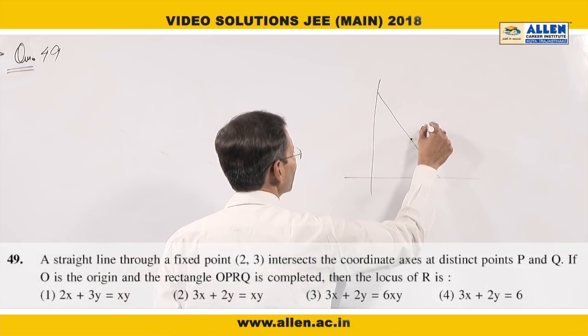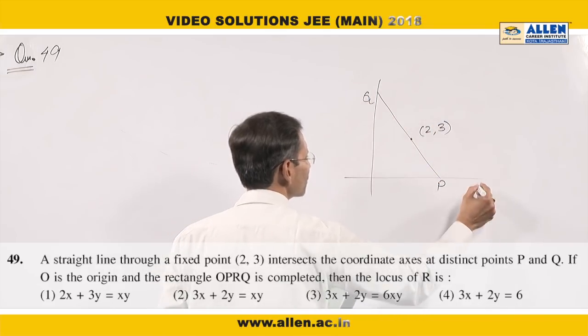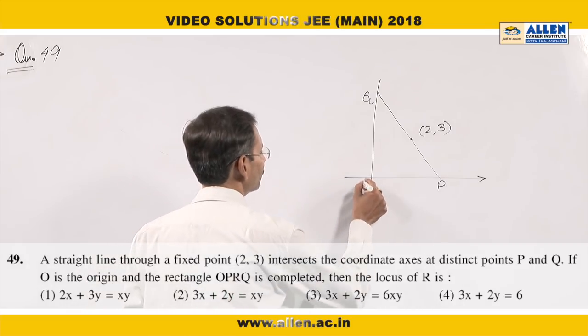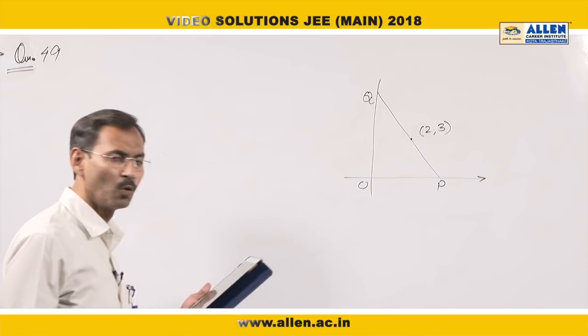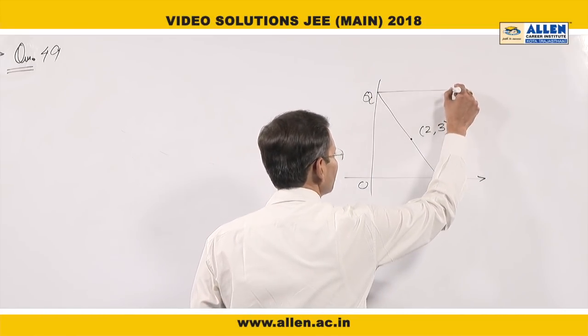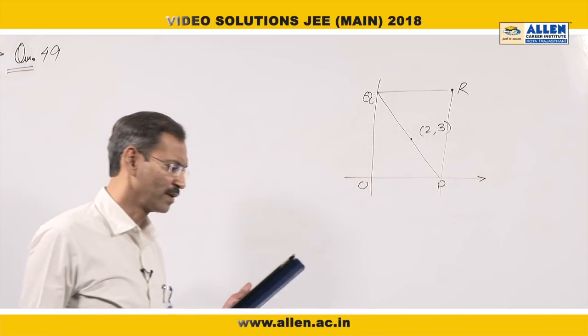This is 2 comma 3 and it is intersecting coordinate axes at P and Q. O is origin and a rectangle is completed OPRQ. So R will be somewhere here, this is point R and we have to find the locus of R.